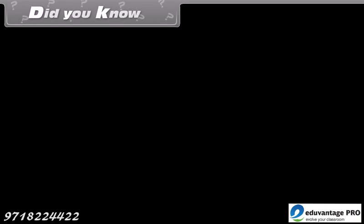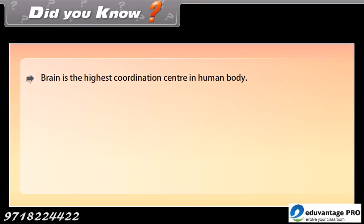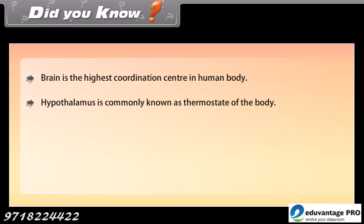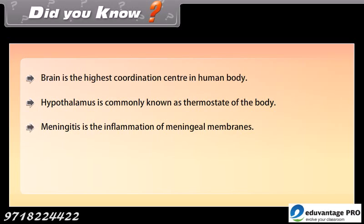Did you know? The brain is the highest coordination center in the human body. The hypothalamus is commonly known as the thermostat of the body. Meningitis is the inflammation of meningeal membranes. The cerebellum is also known as the little brain.